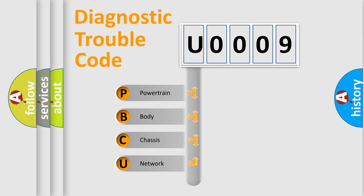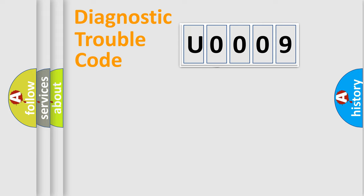We divide the electric system of automobile into four basic units: Powertrain, Body, Chassis, and Network. This distribution is defined in the first character code.